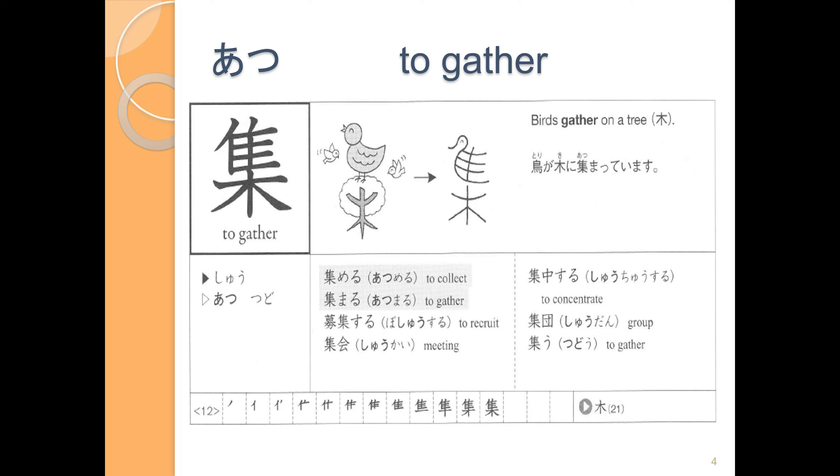On the top we have that part from げつようびの よ, and then at the bottom we have もくようびの もく.